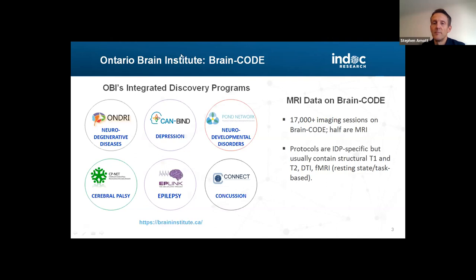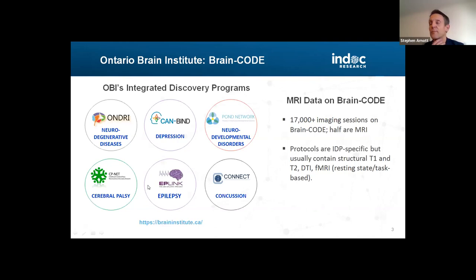The Ontario Brain Institute has achieved some of its goals through their Center for Ontario Data Exploration, or Brain Code, which is another repository. It's centered around six integrated discovery projects around brain disease: a neurodegenerative disease cohort, depression project, neurodevelopmental disorders, cerebral palsy, epilepsy, and concussion.